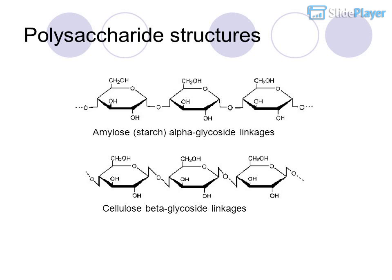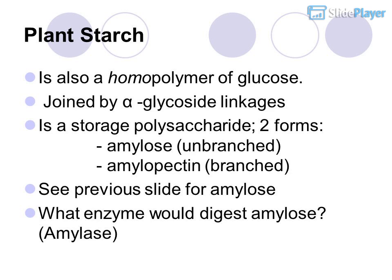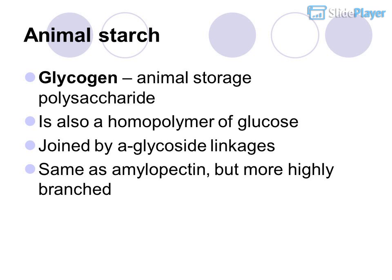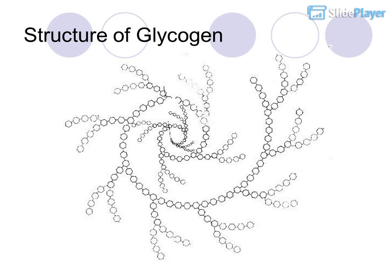Plant starch is also a homopolymer of glucose joined by alpha glycoside linkages and is a storage polysaccharide with two forms: amylose (unbranched) and amylopectin (branched). The enzyme that digests amylose is amylase. Glycogen is the animal storage polysaccharide — also a homopolymer of glucose joined by alpha glycoside linkages, same as amylopectin but more highly branched.